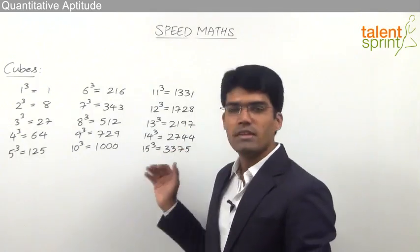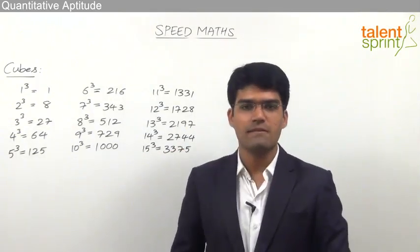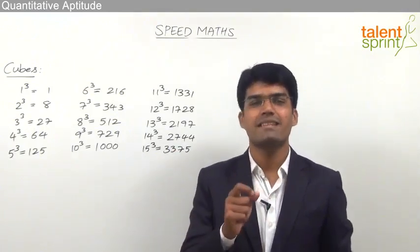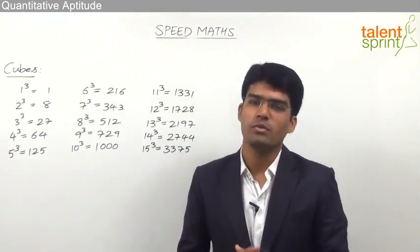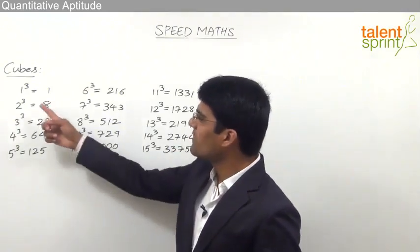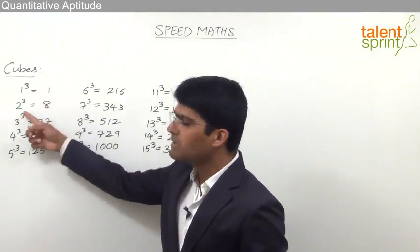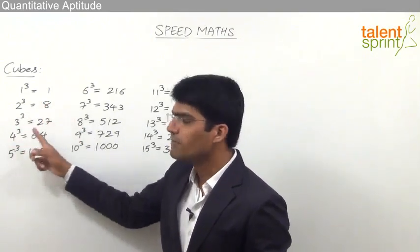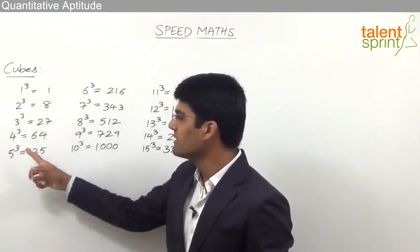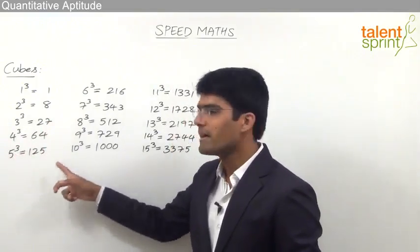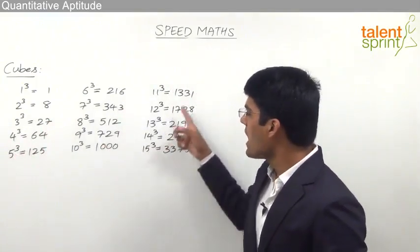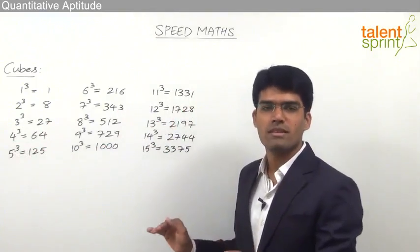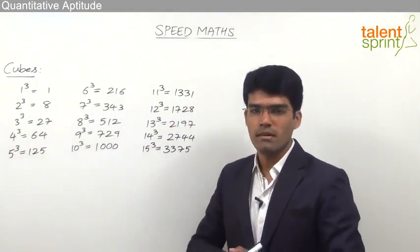Here we have all 15 cubes starting from 1. Let's go through them and also understand the pattern of units digits. We know that 1 cube is 1, 2 cube is 8, 3 cube is 27, 4 cube is 64, 5 cube is 125, and so on up to 15 cubes. This is the minimum we are supposed to remember by heart.